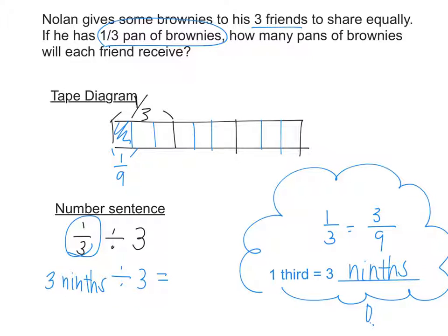Three bananas divided by three — one banana. Three books divided by three — one book. Three thirds divided by three — one third. Three sixths divided by three — one sixth. Three ninths divided by three — one ninth. So the answer is one ninth.